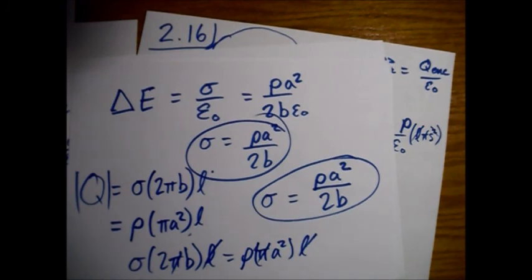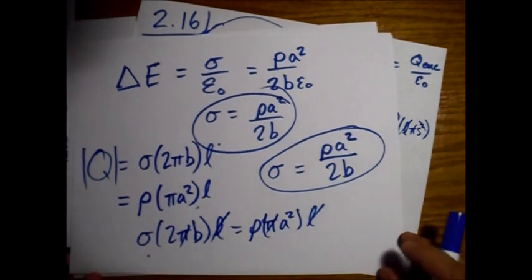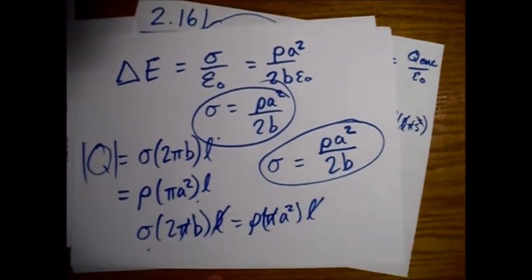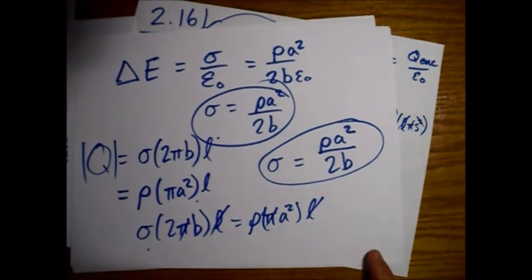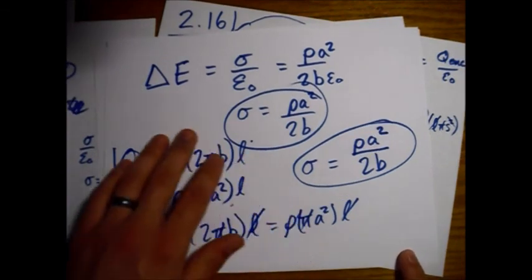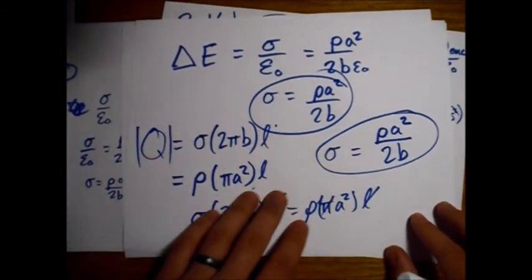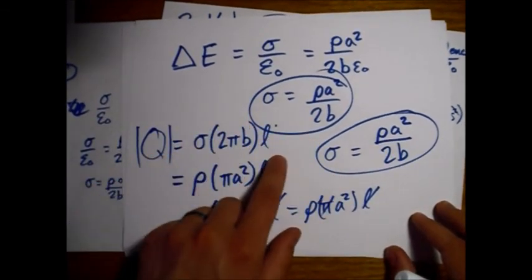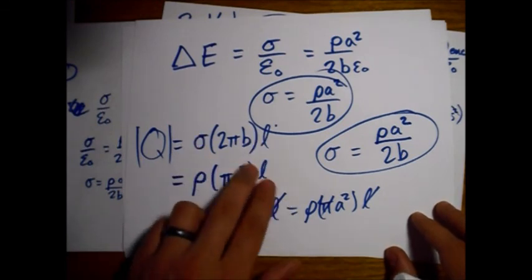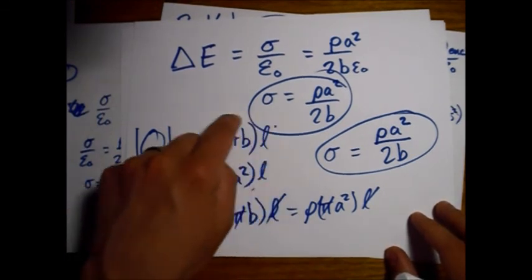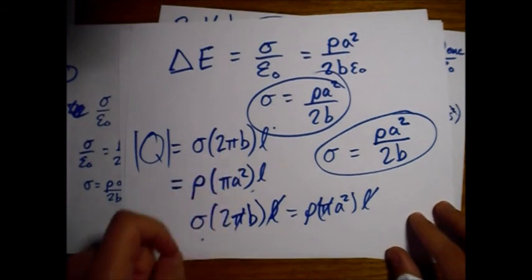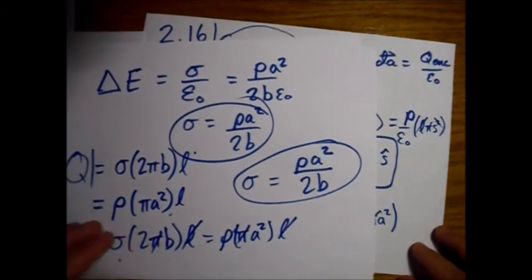Either finding the electric field like we did in the problem and then finding this discontinuity as we cross the surface charge, or as we use this charge balance that Griffiths has given us and find the total charge on the inner cylinder and the total charge on the outer cylindrical shell, we get the same answer.